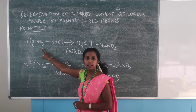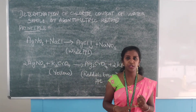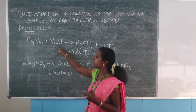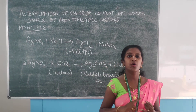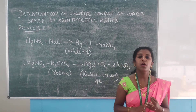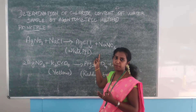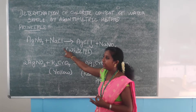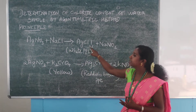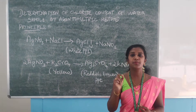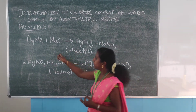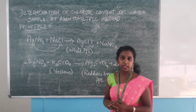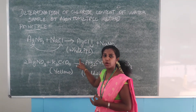For that, I am going to take silver nitrate as the burette solution and a water sample which contains chloride ions. For example, here we have taken sodium chloride which contains chloride ions. Using sodium chloride and silver nitrate, we are going to remove the chloride ions present in the water sample. When silver nitrate reacts with sodium chloride, it gives the product silver chloride, which is a white precipitate.